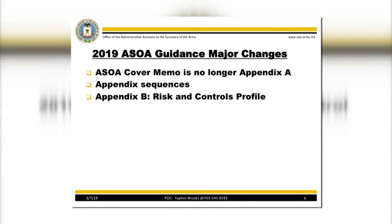This year, ASA FMNC has implemented several changes to the Annual Statement of Assurance. The changes include labeling and sequencing of appendices and format changes for certain templates.